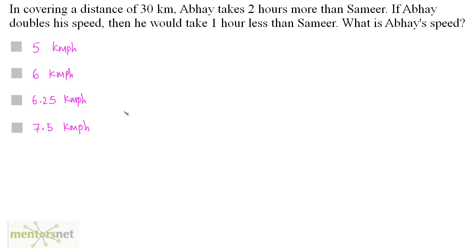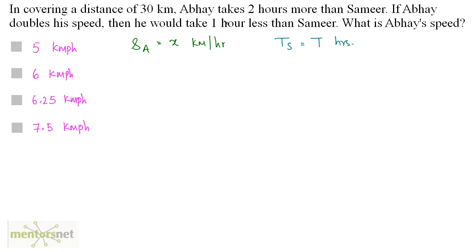In covering a distance of 30 km, Abhay takes two hours more than Samir. If Abhay doubles his speed, he would take one hour less than Samir. What is Abhay's speed? Let the speed of Abhay be x km/h and the time taken by Samir be t hours. In the first situation, Abhay takes two hours more than Samir when his speed is x.